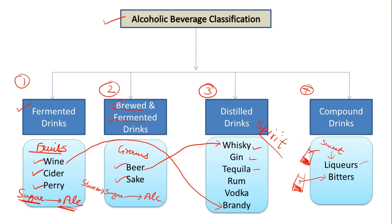Examples of liqueurs include Tia Maria, Cointreau, and Kahlúa. Examples of bitters include Angostura Bitters and Campari. So to summarize the classification: first is fermented drinks, made from fruits which have sugar readily available for fermentation. Second is brewed and fermented — these are grains which don't have sugar readily available; the starch must be converted to sugar, then fermented to make alcohol. These include beer and sake.